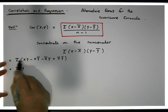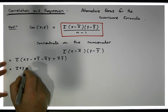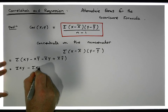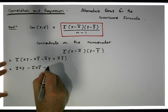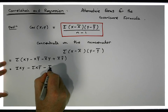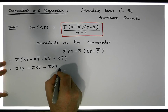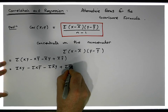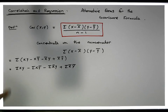Continuing, we have minus the sum of xȳ, minus the sum of x̄y, and plus the sum of x̄ȳ.